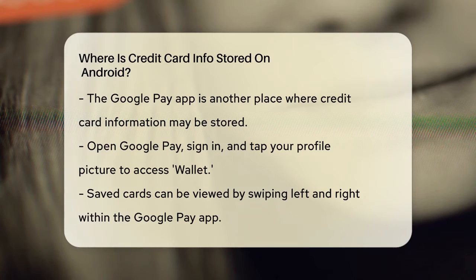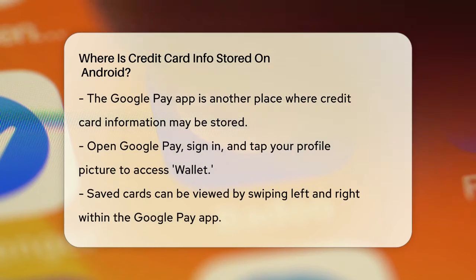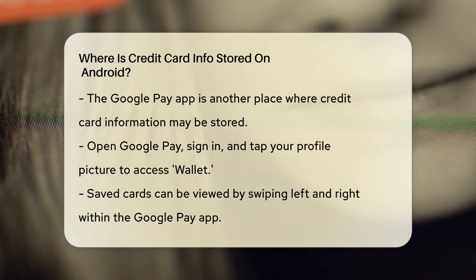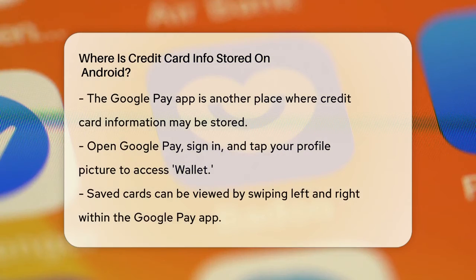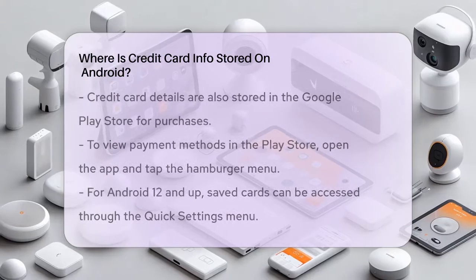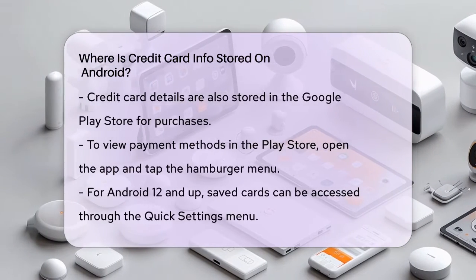If you use the Google Play Store for purchases, your credit card details are also stored there. To view these, open the Google Play Store app, tap the hamburger menu in the upper right corner, and select Payment Methods. Here, you'll see all your payment methods, including credit cards and PayPal.